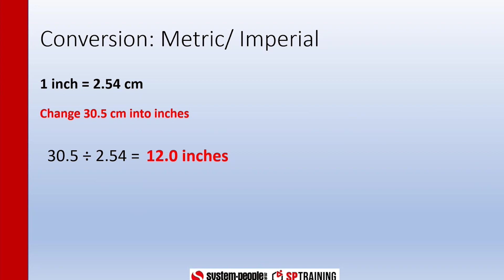So 30.5 centimeters is the same as 12 inches. And if we want to change inches into centimeters, we just multiply by the conversion rate. In this case it's 2.54, so we do 7 times 2.54, and 7 inches is 17.78 centimeters.